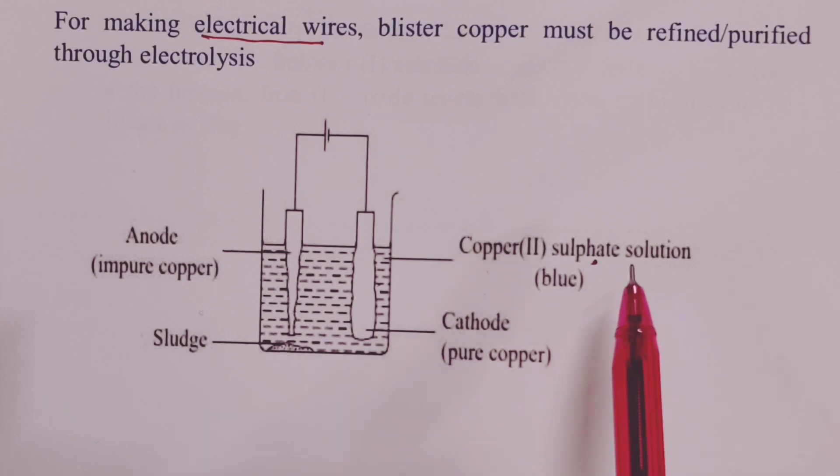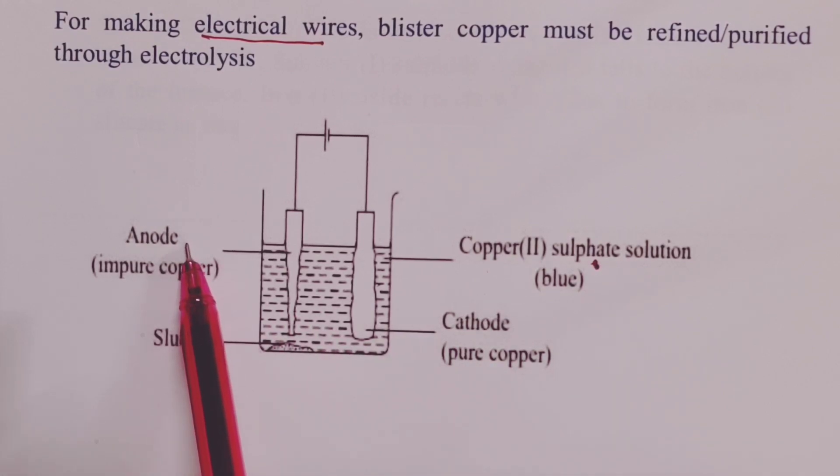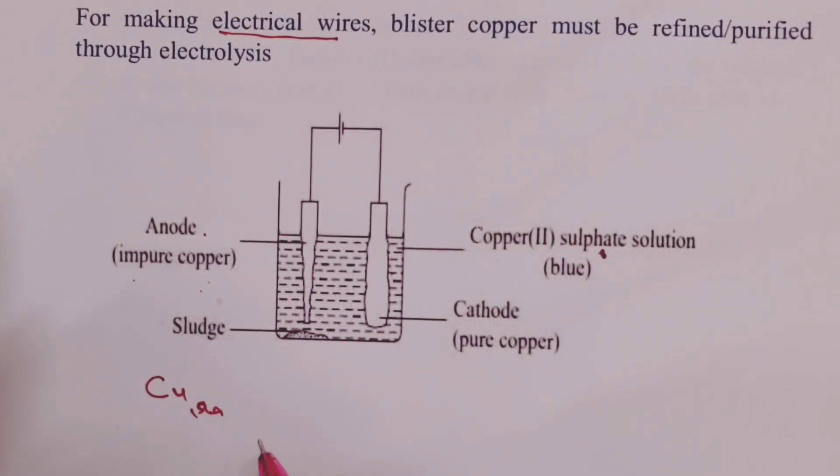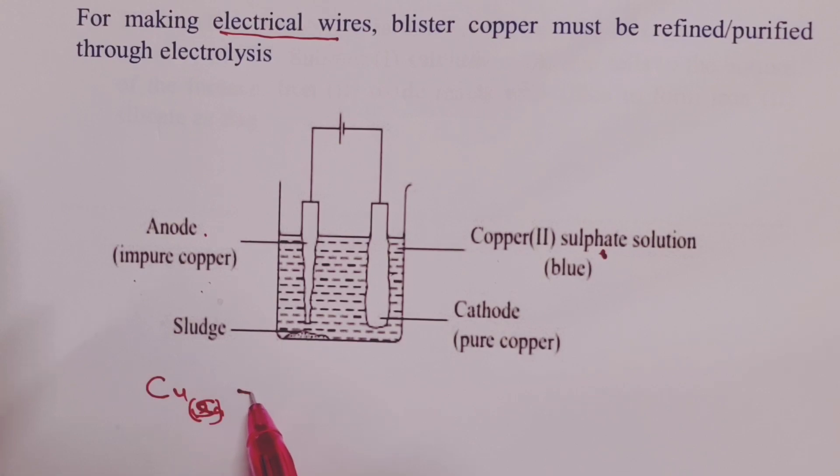Our electrolyte is a solution of copper-2-sulfate with some sulfuric acid added. This is to improve on conductivity of our solution. The anode is where we shall put our blister copper, the impure copper. Here, oxidation will take place where the impure copper in solid state will be converted into ions. And this process is accompanied by loss of 2 moles of electrons.